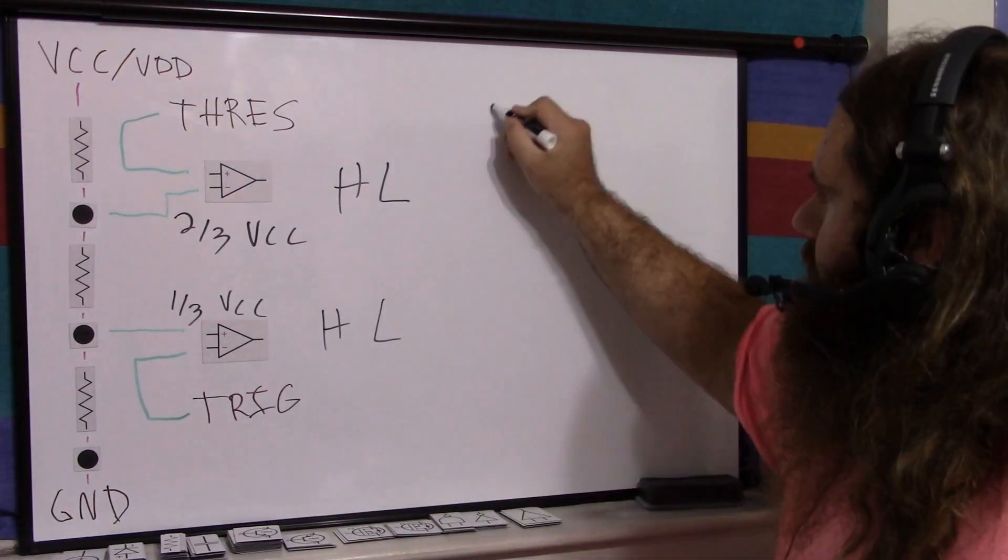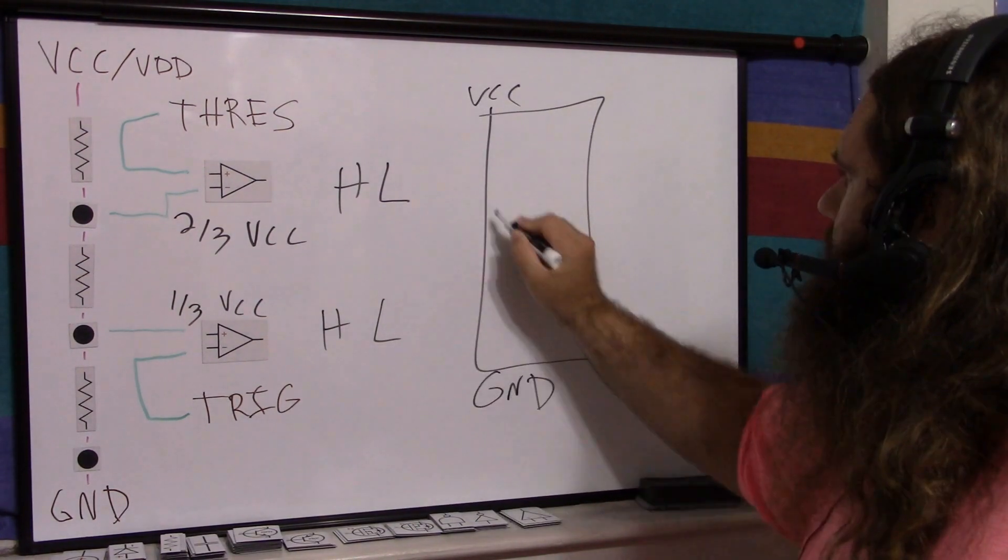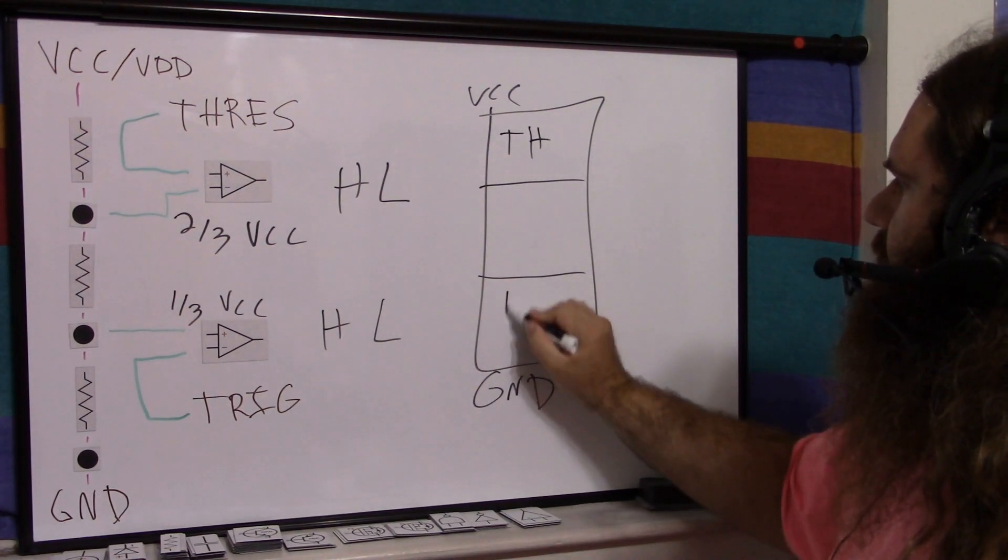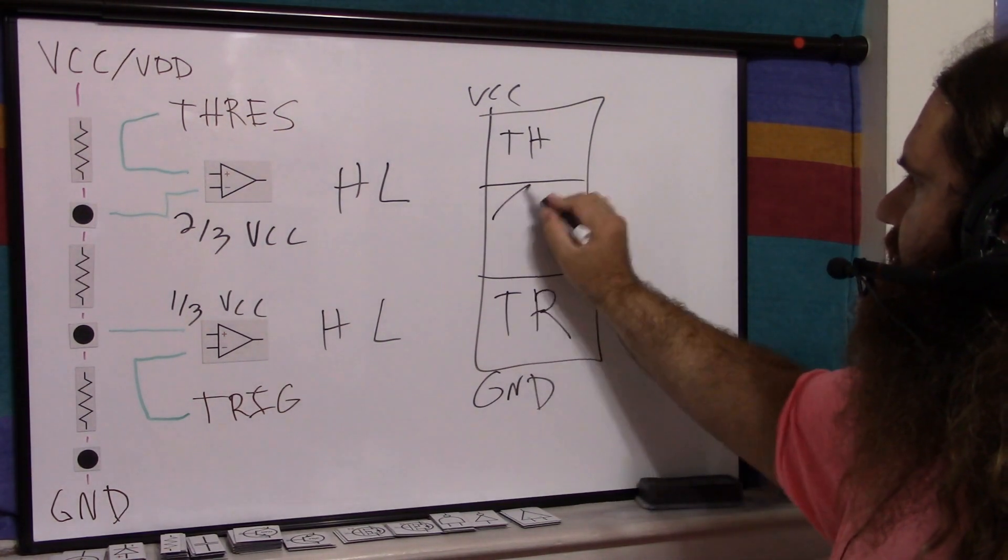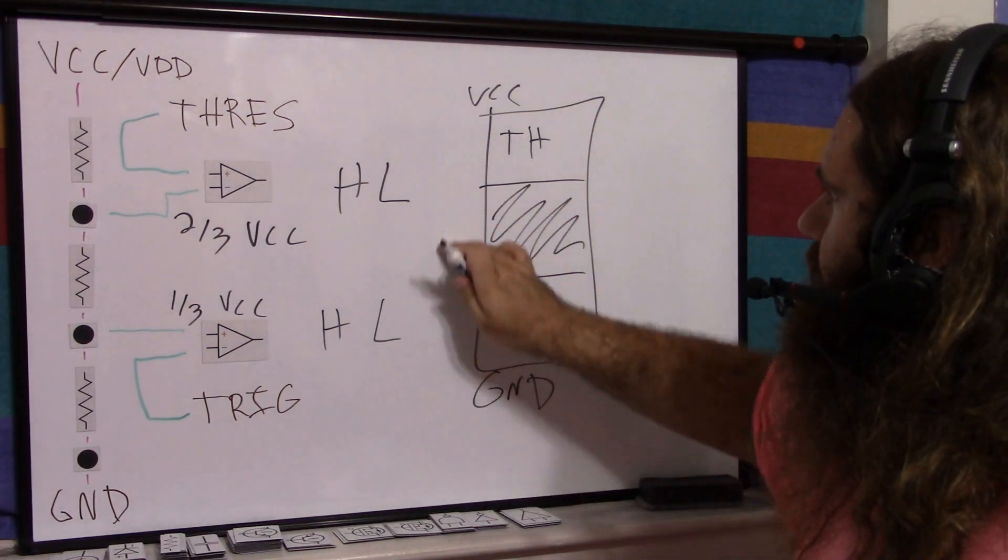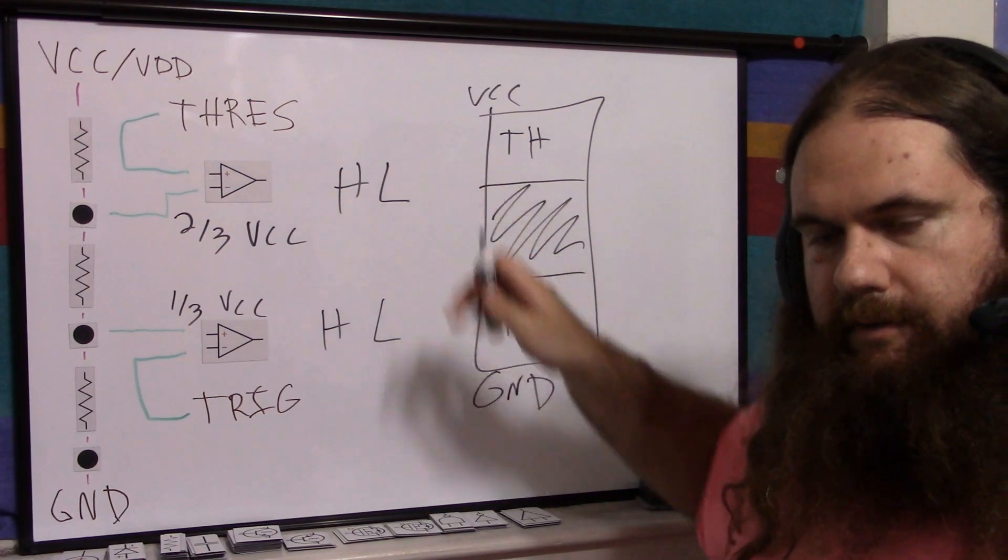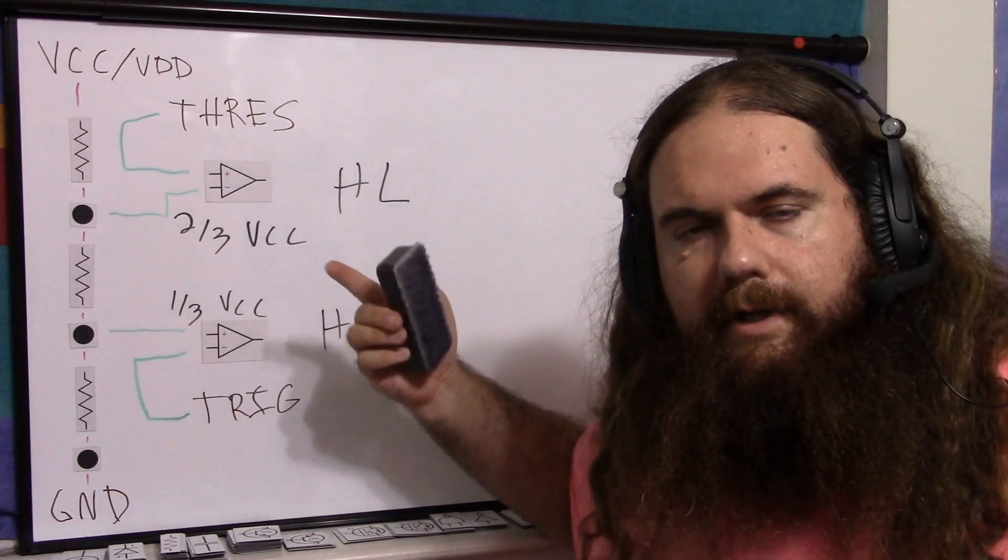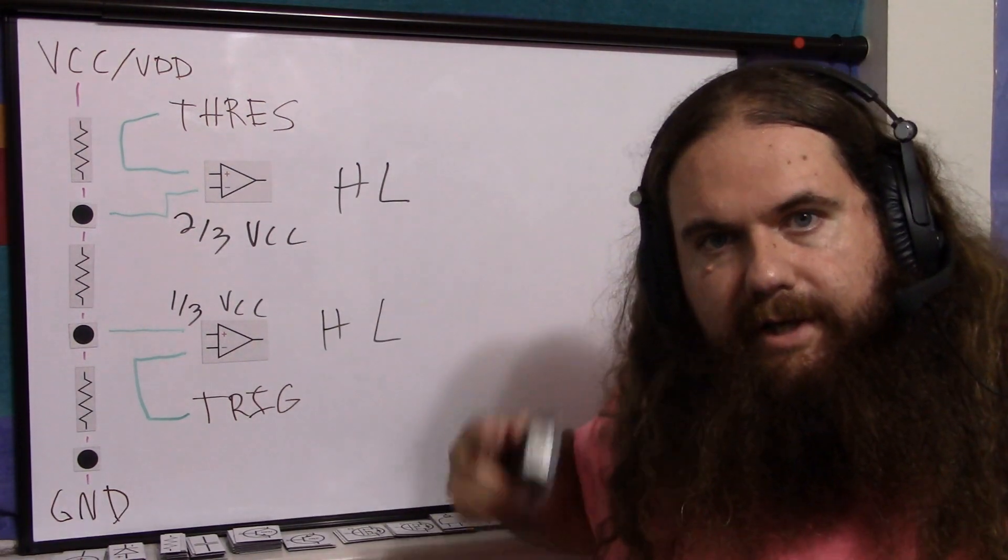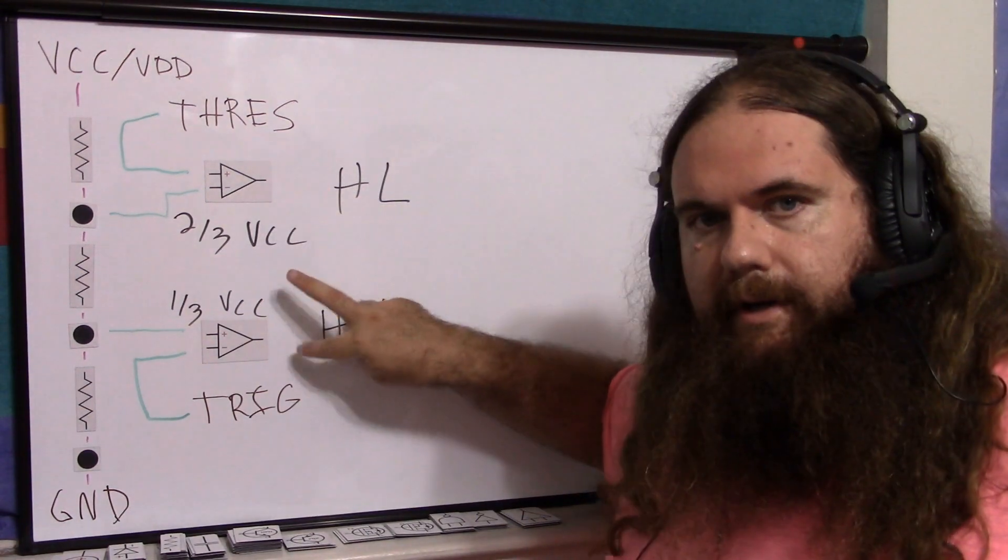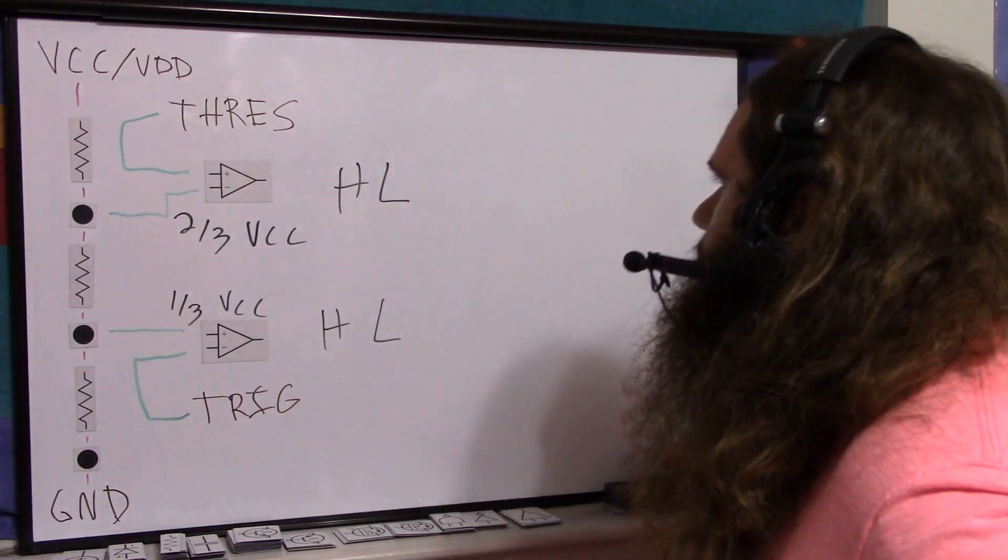So basically, this comparator is true logically when threshold is bigger than two-thirds VCC. This comparator is true when trigger is smaller than one-third VCC. So there's a sandwich here. Threshold should be higher, or trigger should be lower, and that's when these are active. You have this VCC here and ground, and it's divided in thirds. This is the threshold zone, and this is the trigger zone. When the voltage falls, it's triggering. When the voltage rises, it's reaching its threshold.